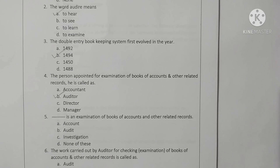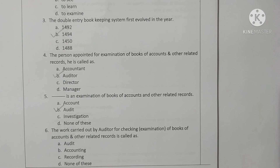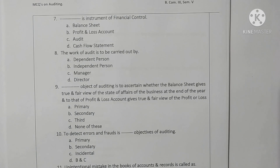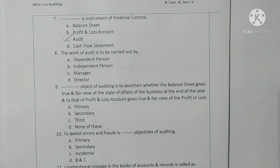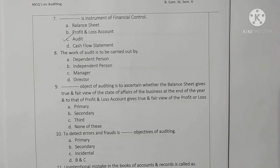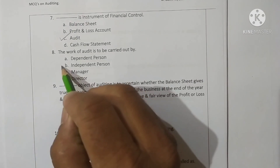Question 5: The examination of books of accounts and other related records is called an audit — option B is correct. Question 6: The work carried out by an auditor for checking and examination of books of accounts and other related records is called an audit — option A is correct. Question 7: Audit is an instrument of financial control — option C is correct.